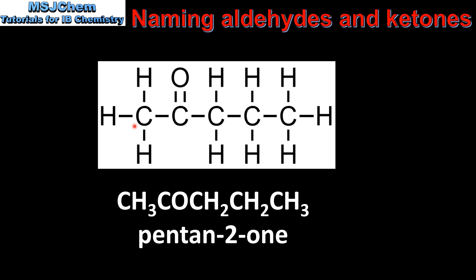In our last example we have five carbon atoms. That means there are different positions in which the carbonyl group could be. The carbonyl group in this molecule is on the second carbon, therefore we name it pentan-2-one.